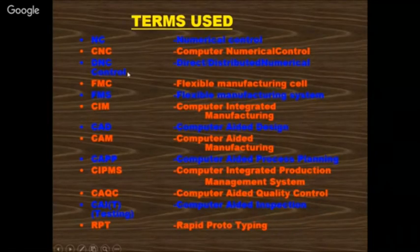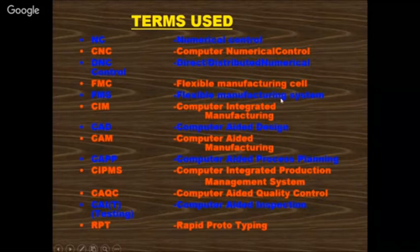Terminologies used in computer manufacturing include: numerical control (NC), computer numerical control (CNC), direct numerical control (DNC), flexible manufacturing cell, FMS (Flexible Manufacturing System), computer integrated manufacturing (CIM), and computer engineering. We have a sophisticated FMS lab. These are the terms used in CNC.